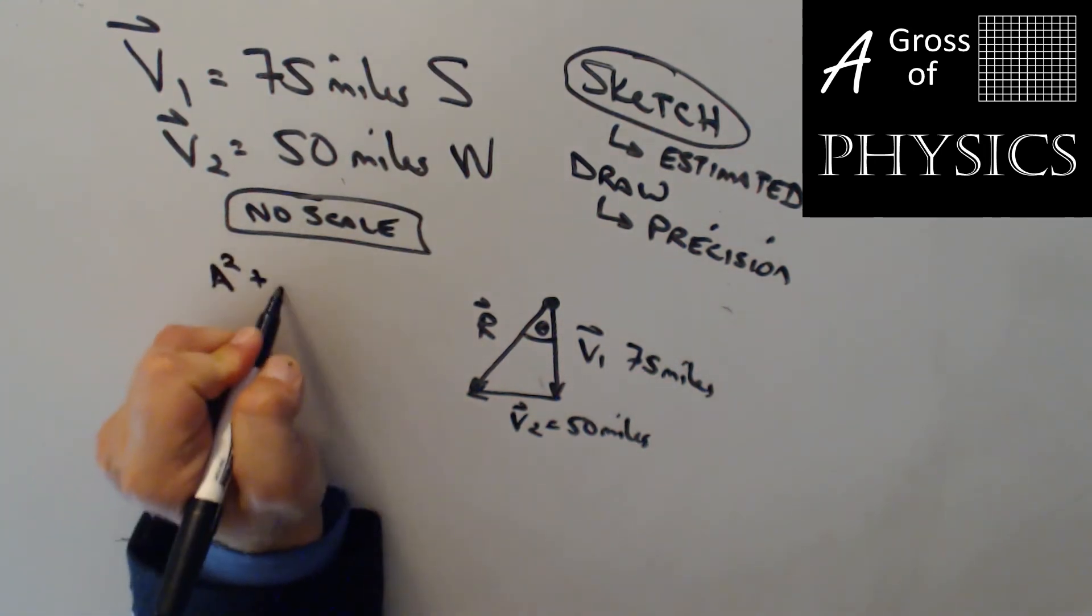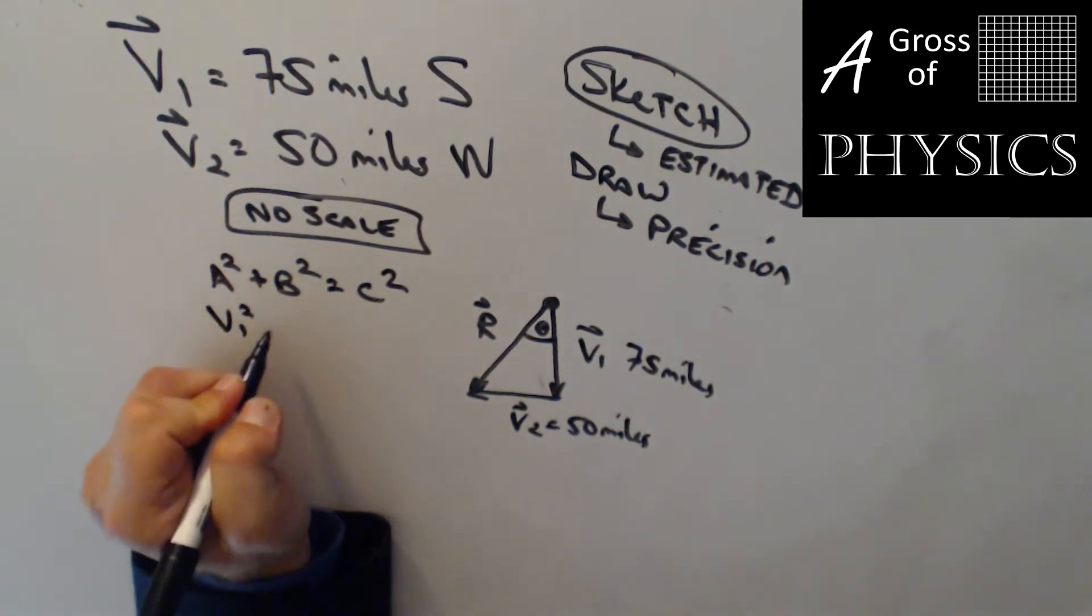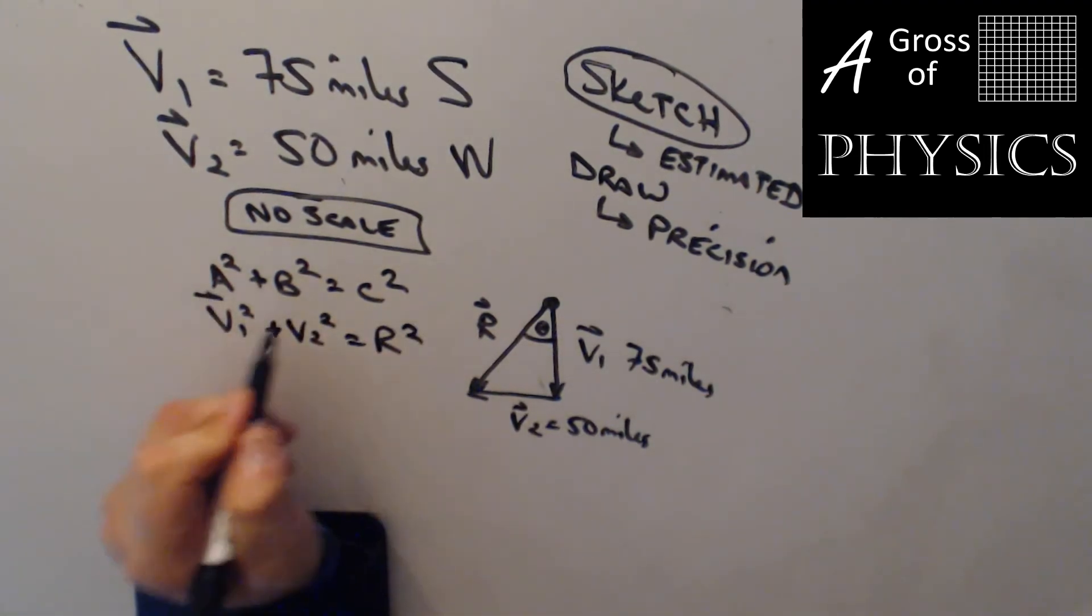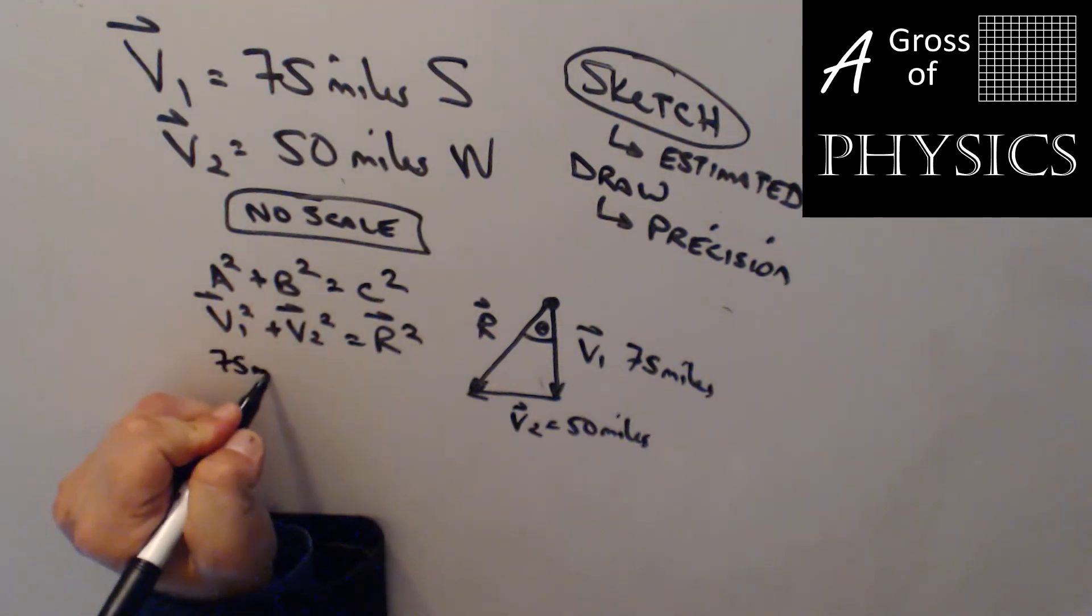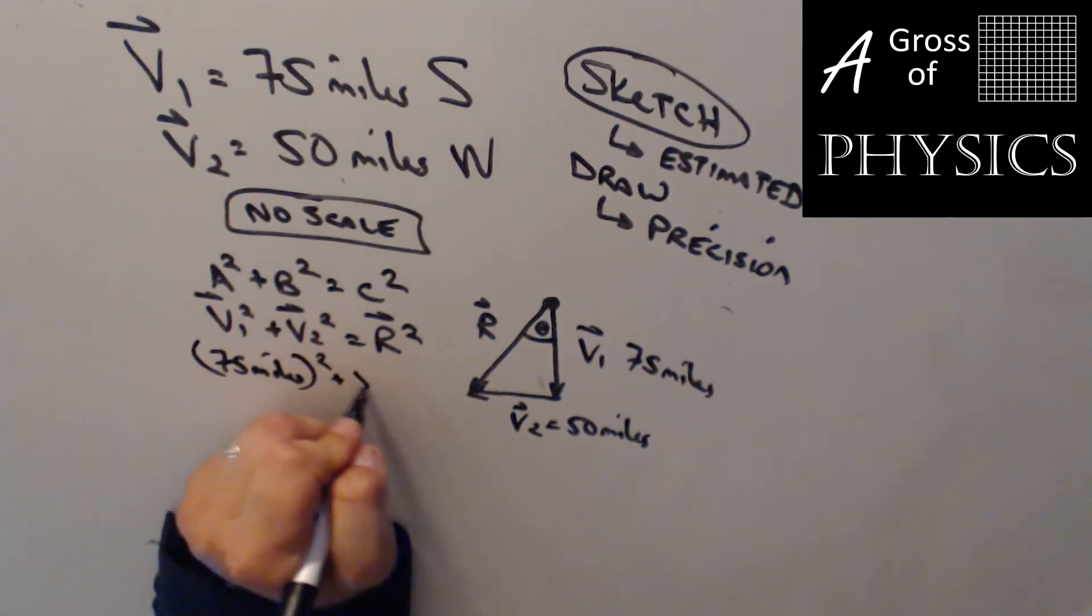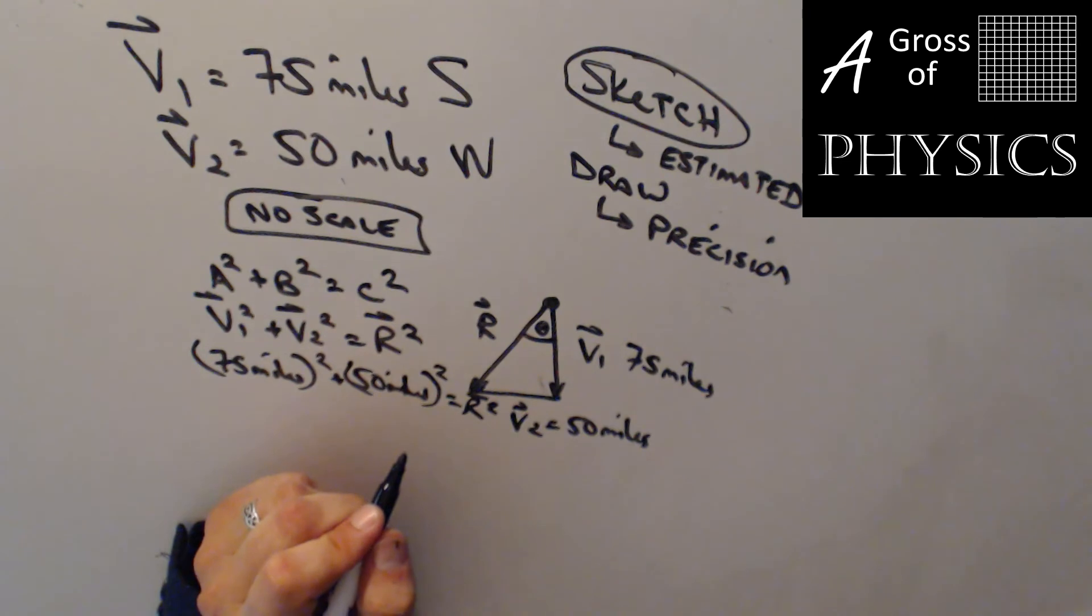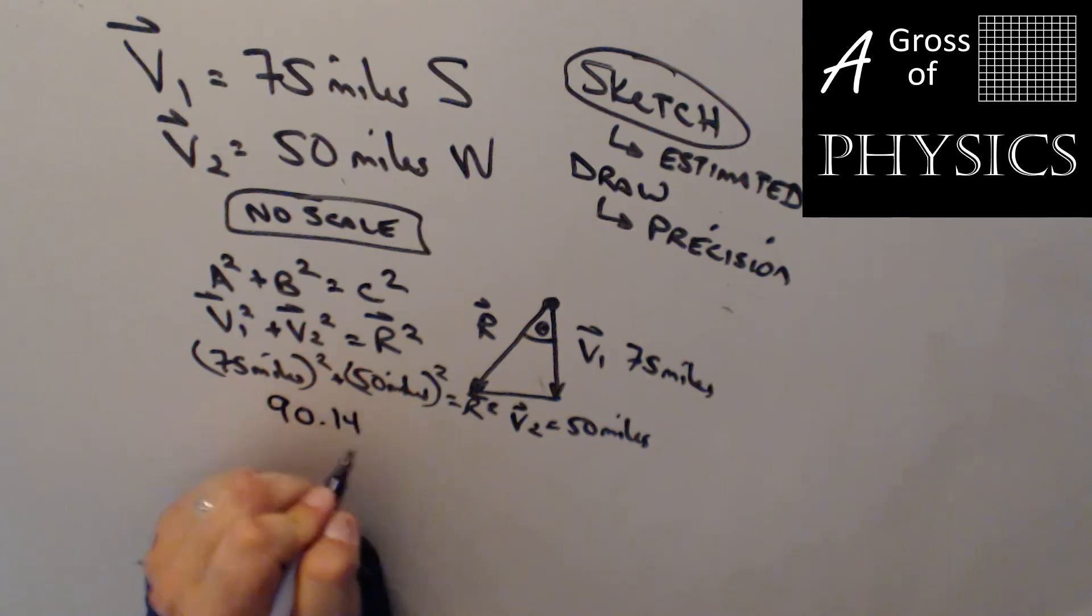So we use the Pythagorean theorem. A squared plus B squared equals C squared. In this case, it would be V1 squared plus V2 squared equals R squared. And that is just using the variables that we have in this triangle. So 75 miles squared plus 50 miles squared equals R squared. So 75 squared plus 50 squared equals 8,000 and change. I'll take the square root, and I have 90.14 miles.